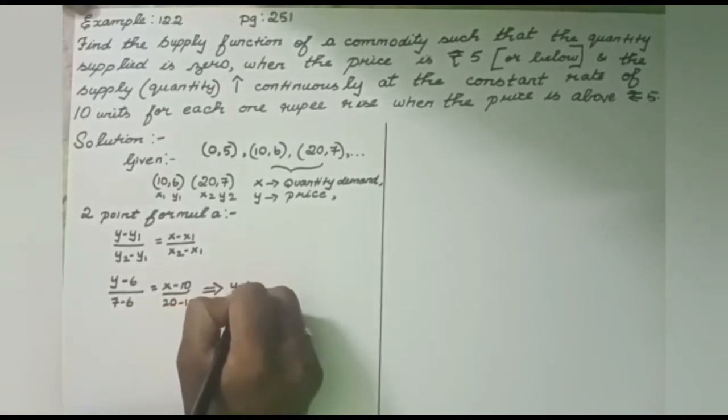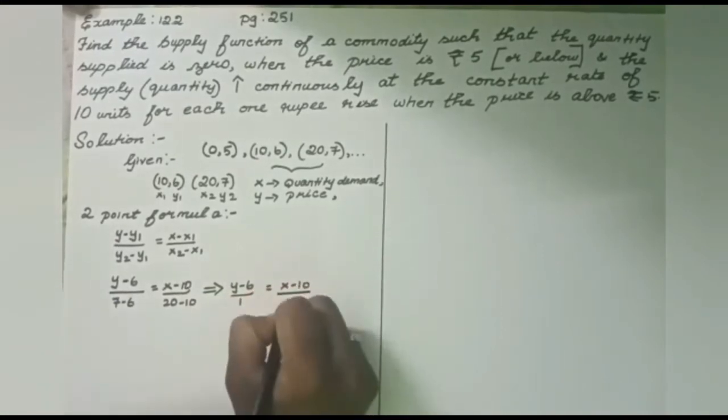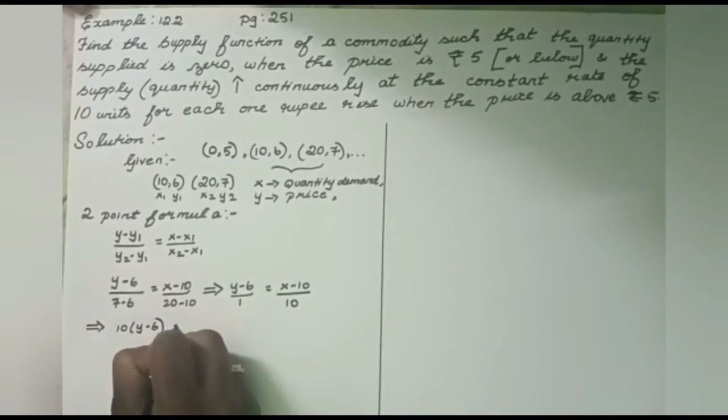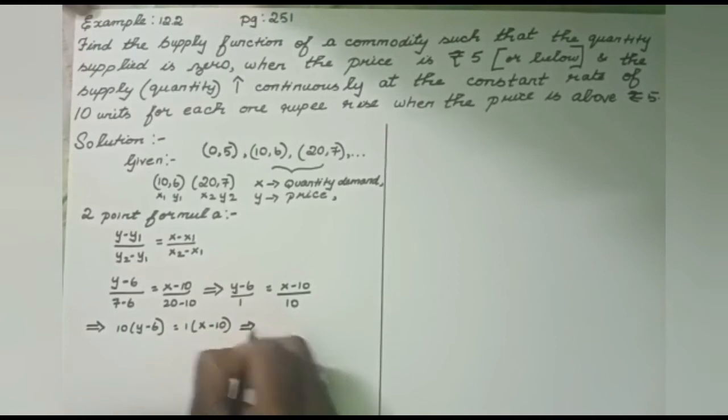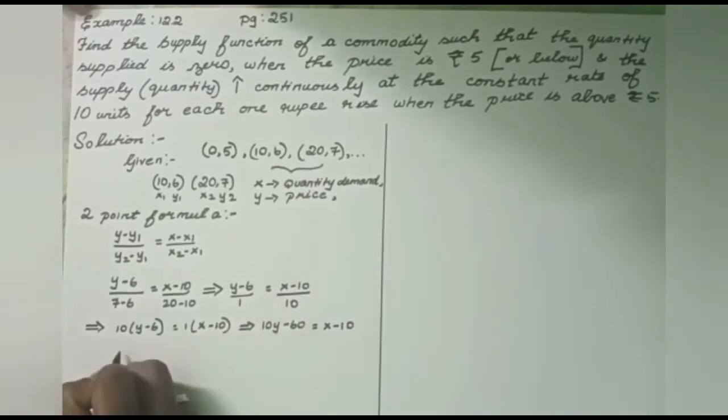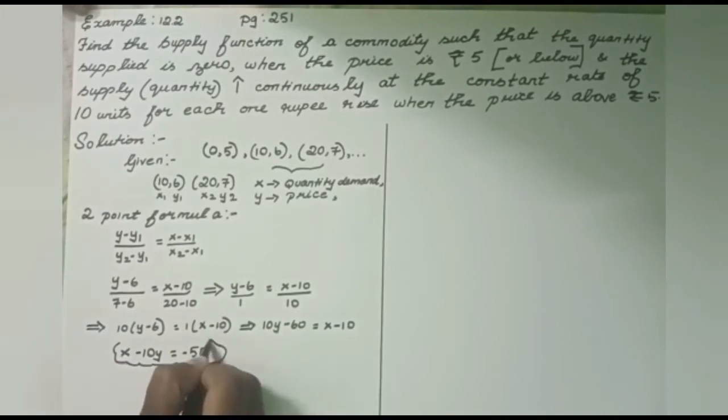Using the two point formula: y minus y1 divided by y2 minus y1 equals x minus x1 divided by x2 minus x1. The reason we mention x and y is because that's what we need to find as the answer. So y minus 6 divided by 7 minus 6 equals x minus 10 divided by 20 minus 10. It further simplifies as y minus 6 divided by 1 equals x minus 10 divided by 10.